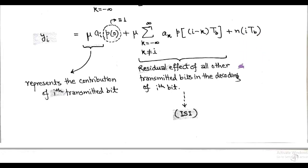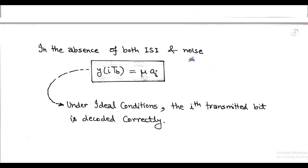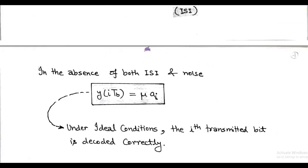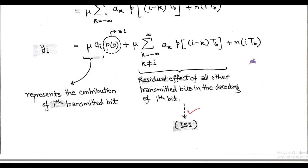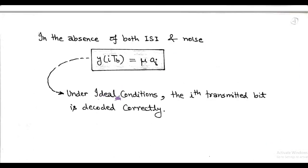So, in the baseband transmission of binary data, there is a problem due to inter-symbol interference and channel noise, represented by the second and third terms. Under ideal conditions — that is, in the absence of inter-symbol interference and channel noise — y_i = μ · a_i.